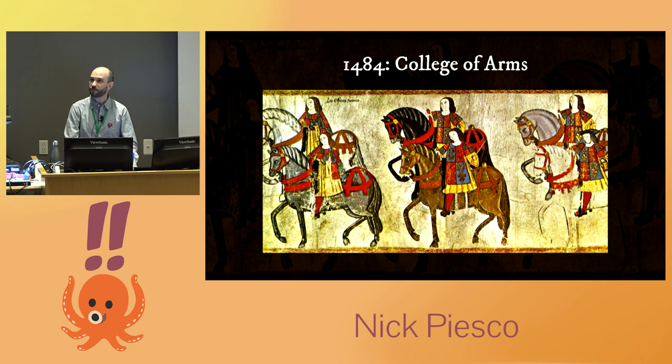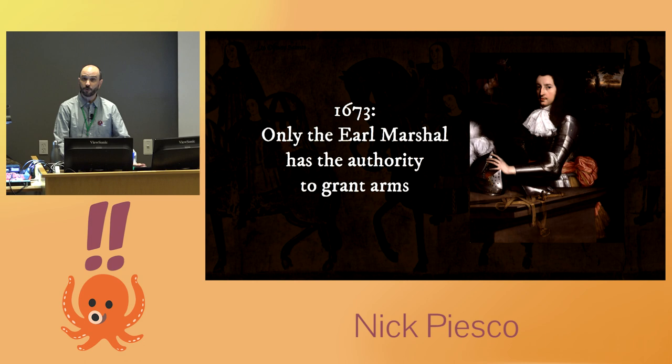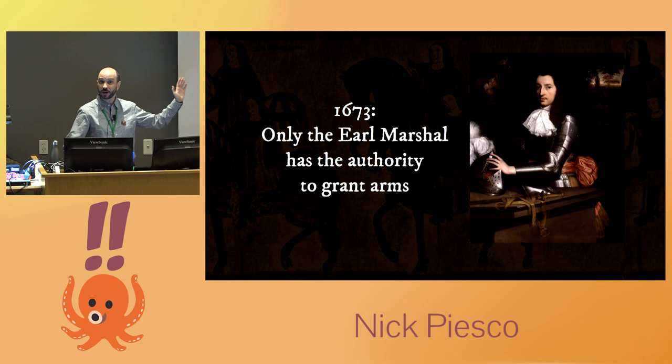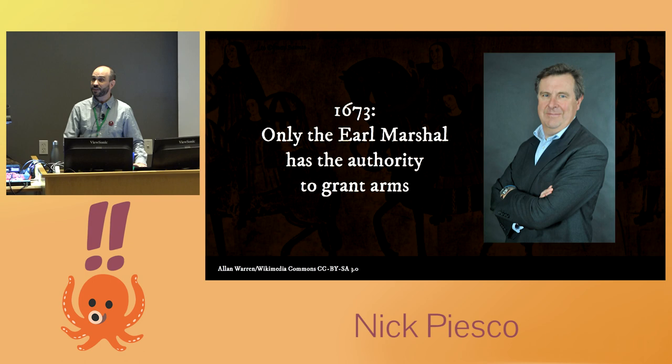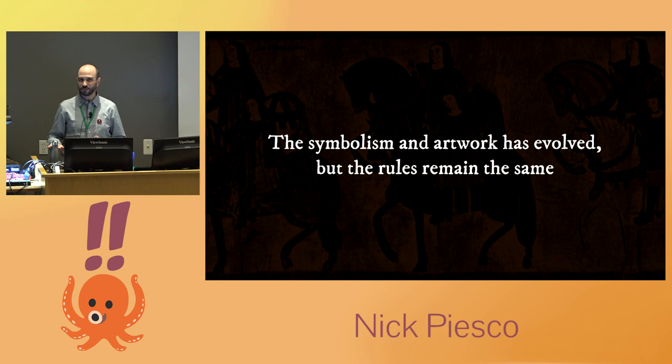The College of Arms gets a boss in 1673 — the Earl Marshal, the highest-ranking hereditary non-royal office in the United Kingdom. No arms are granted without his authority. This guy with the fabulous collar is Henry Howard, the 6th Duke of Norfolk, the first Earl Marshal to oversee the College of Arms. And this is Edward Fitzallen Howard, the 18th Duke of Norfolk, who oversees the College of Arms today. If you apply for arms, you need to get this guy's permission. The symbolism and artwork has evolved over the past several hundred years, but the rules remain the same.